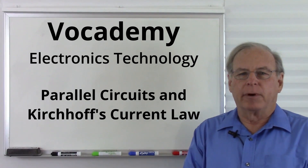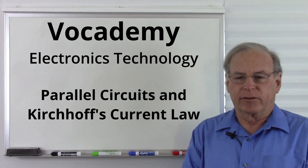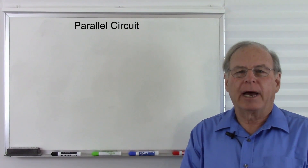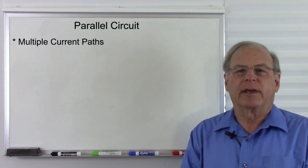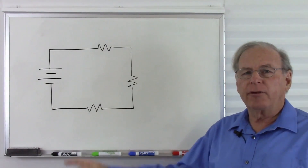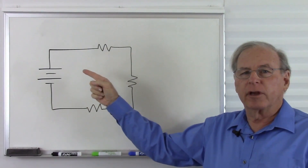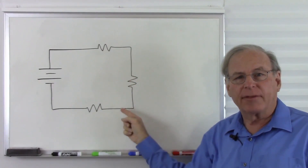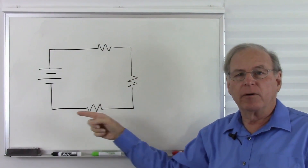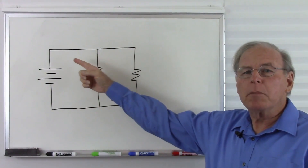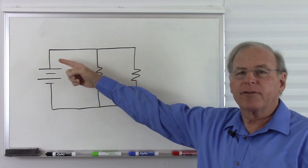Today we are going to talk about parallel circuits. A parallel circuit by definition is a circuit that has multiple current paths. So in contrast to a series circuit where there's only one possible path for current to flow, a parallel circuit has multiple paths.